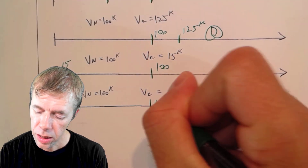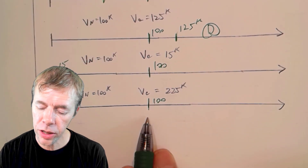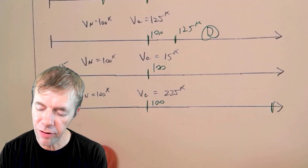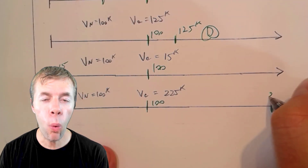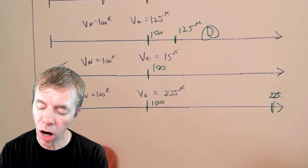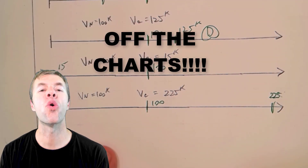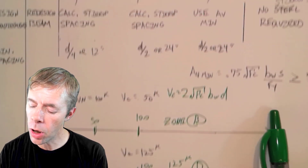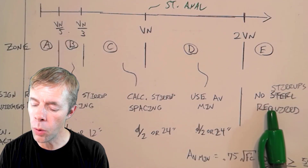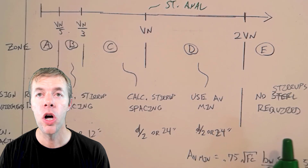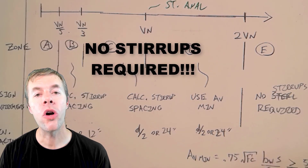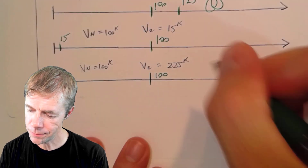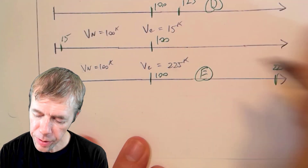Last case — 100 kips design shear, but this time V sub C is 225 kips. That puts us way off the chart to the right. We go up and find: no stirrups required. This is Zone E — a great day for concrete.